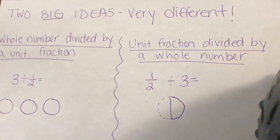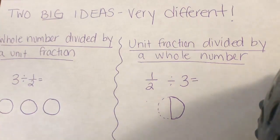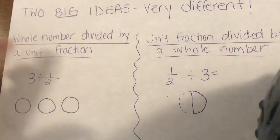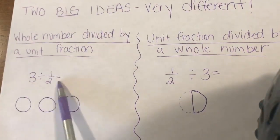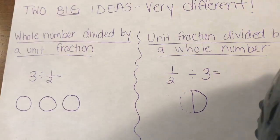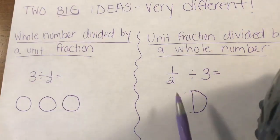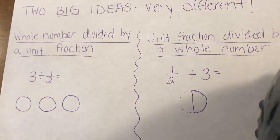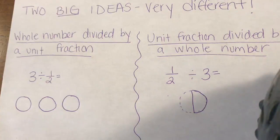Last week with the work that you did, there were two big ideas that you learned that were very different. When we started the week and watched the video I made, we looked at whole numbers getting divided by unit fractions — that's a whole number being divided by a fraction. The other thing you saw was that a unit fraction could get divided by a whole number, where your fraction is first and it's getting divided by a whole number. Today I wanted to look at these two big ideas, see how they're different, and also how we can apply them to things we see around us.